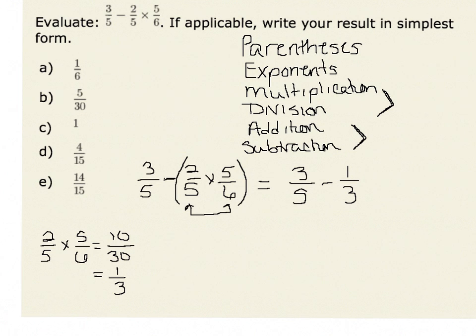Therefore, we need to rewrite 3 fifths and 1 third with a common denominator of 15. We would recognize that in order to get 3 fifths with a common denominator of 15, we would multiply both numerator and denominator by 3.